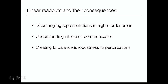I'm going to talk about three topics. First, single populations of neurons in higher order areas such as prefrontal cortex, and how you can disentangle representations that look very complex on the single-cell level using linear readouts. Then I'll talk about two populations — recordings from V1 and V2 — trying to understand how one population feeds into the next, so inter-area communication. Finally, a brief teaser about work with Sophie Denève on how a linear readout combined with a principle of efficiency can explain excitatory-inhibitory balance and robustness of neural networks.